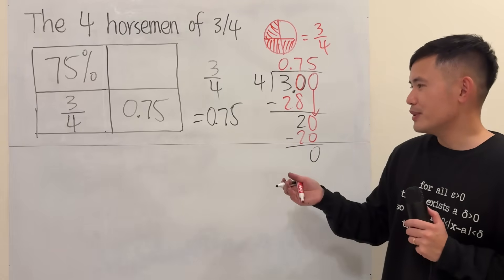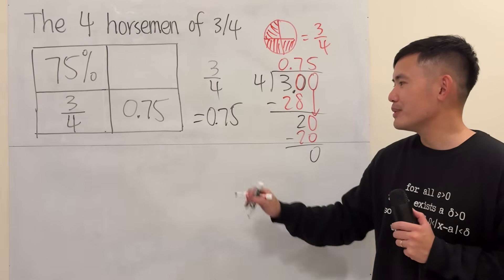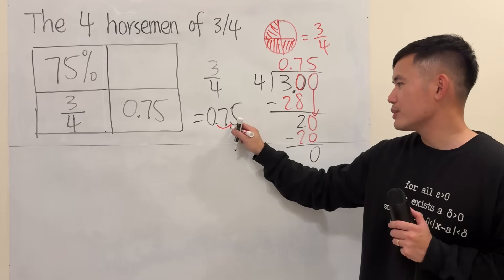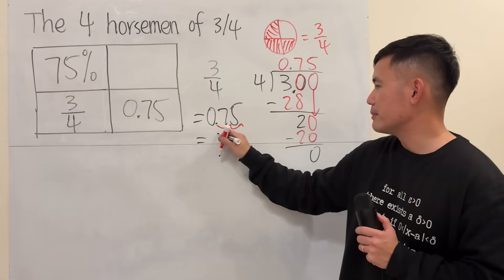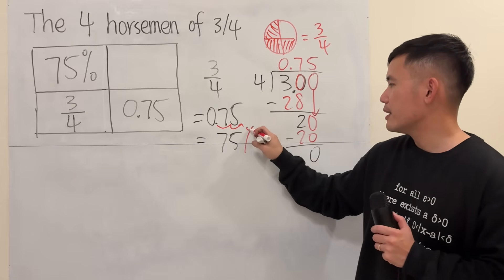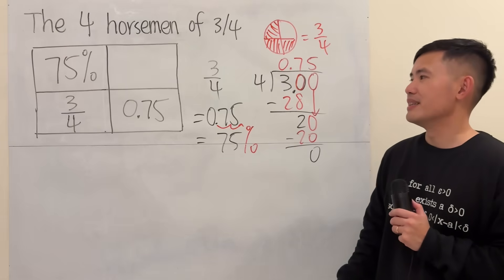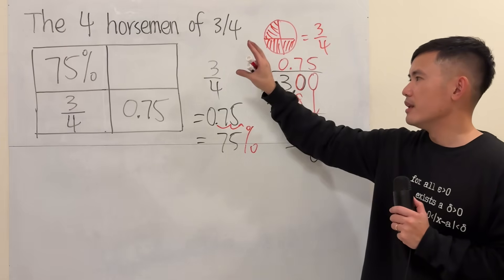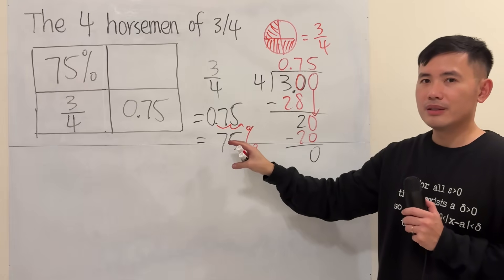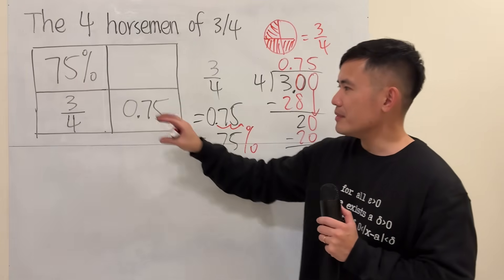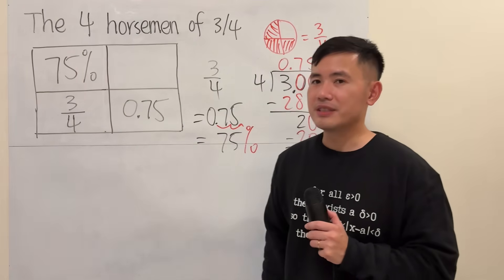Now, to change this into percent, all you have to do is move the decimal point twice to the right. And then you attach that percentage symbol. So this is the same as 75%. Done. So this is how you go from a fraction to a decimal and then to a percent. You should always do it like that. Fraction to a decimal and to a percent.